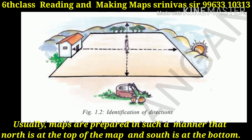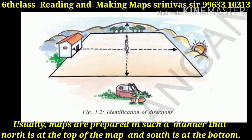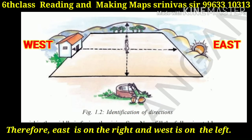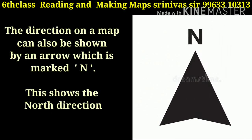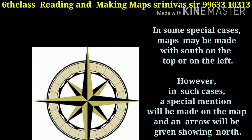Usually maps are prepared in such a manner that north is at the top of the map and south is at the bottom. Therefore, east is on the right and west is on the left. The direction on a map can also be shown by an arrow which is marked N, showing the north direction.